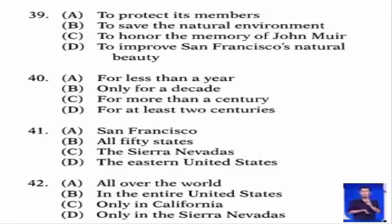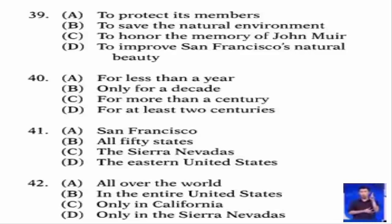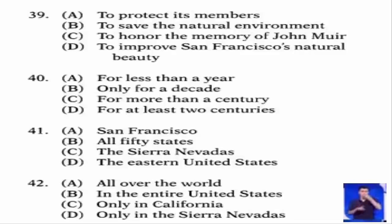Welcome to this introductory meeting for new members of the Sierra Club. The Sierra Club is an organization whose goals are centered on the protection of the environment. It was founded in 1892 in San Francisco by naturalist John Muir, who was intent on preserving the natural beauty and harmony of the Sierra Nevadas in Eastern California.